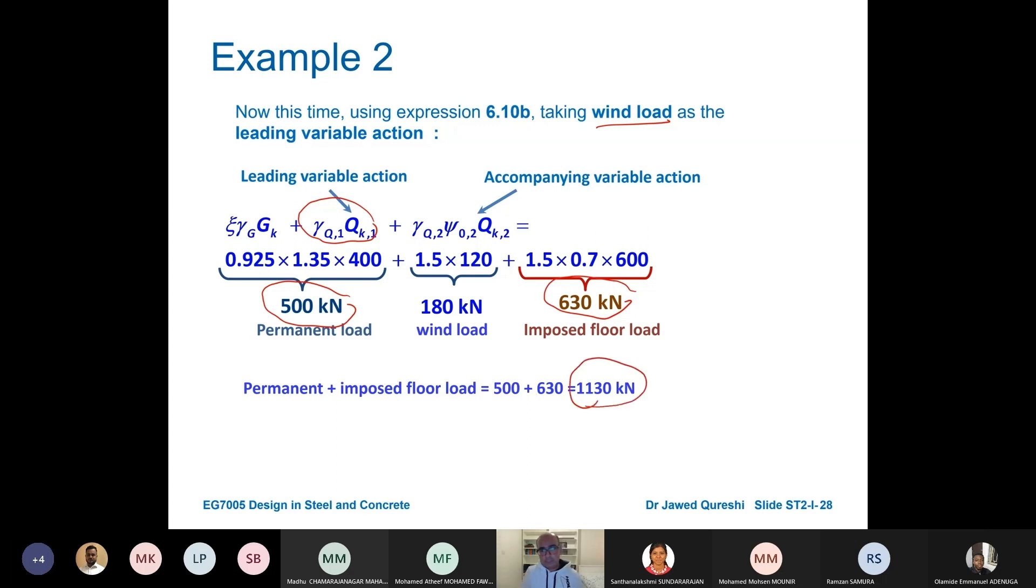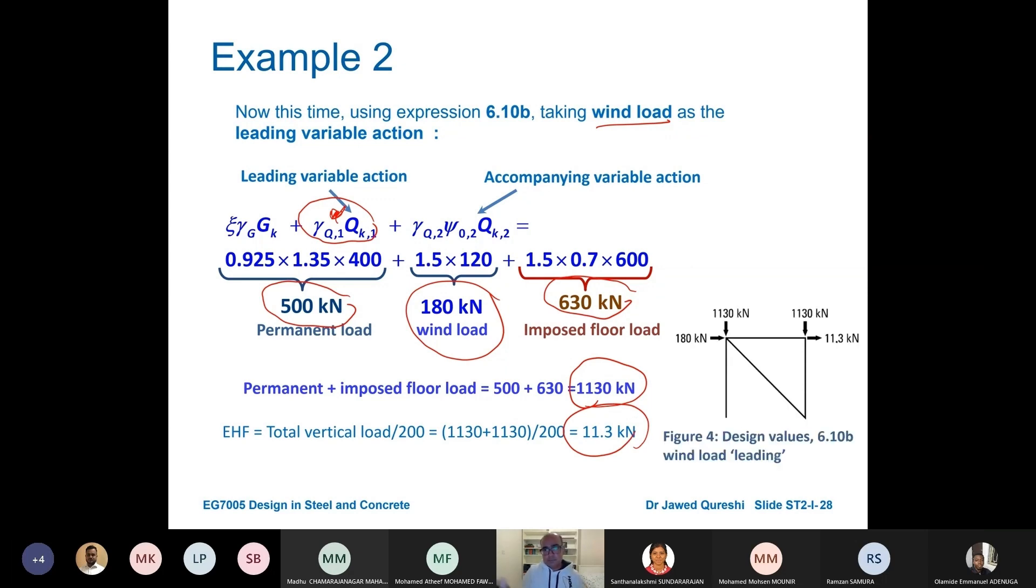This is imposed floor load and this is the permanent one. The total permanent plus imposed floor load, the total design load, the vertical design load is going to be 1130. And now because wind is the leading variable we are not multiplying 0.5 over here. We are not multiplying any psi here so this is 180 kN.